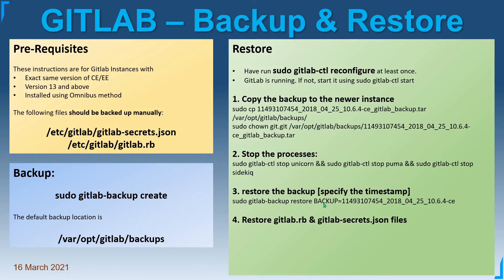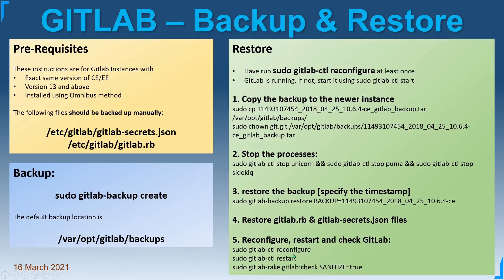Now we need to transfer the configuration file and the secrets file from the older instance into the new one. Finally, we perform a reconfiguration and restart GitLab. To make sure everything is working, we run the 'gitlab-rake gitlab:check' instruction. And there you go — you have now restored your GitLab instance to a newer VM or newer instance.